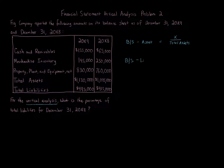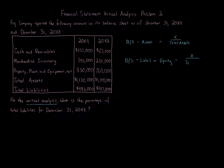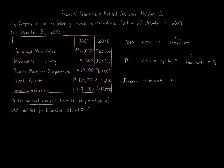If it's a balance sheet liability or stockholders' equity item — whether it's a sole proprietorship with owner's equity, a partnership with capital, or a corporation — the formula is the item at issue over total liabilities plus equity. For any income statement item, you take the item at issue and put it over the denominator of sales.